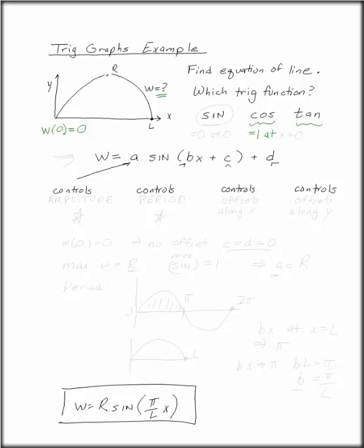Cosine is equal to one at x equals zero, so that's not perfect. We could shift it right or left on the x-axis, but sine is already equal to zero at zero. So let's start with sine.